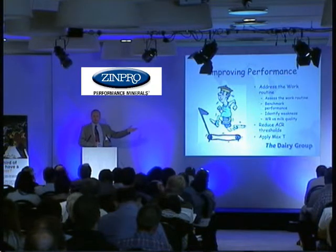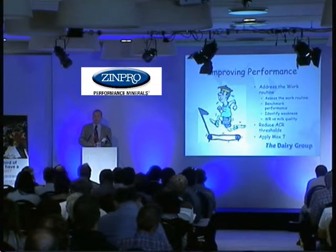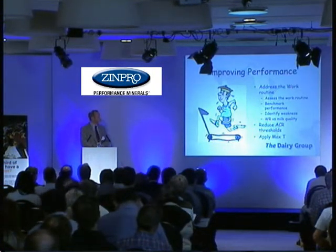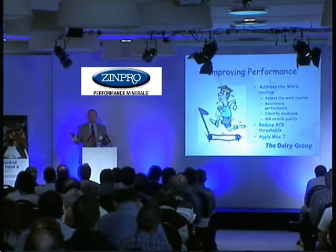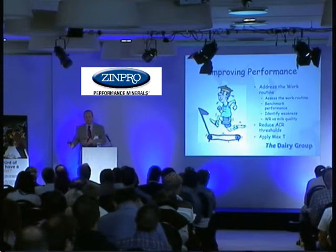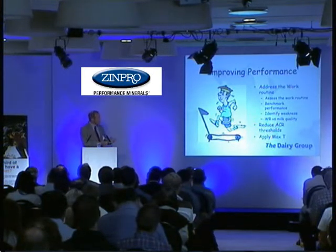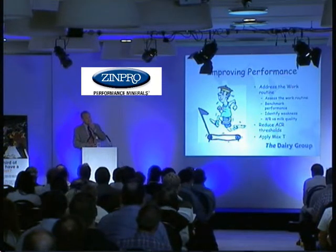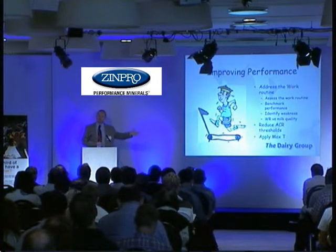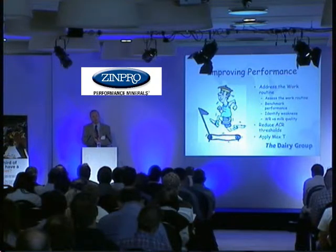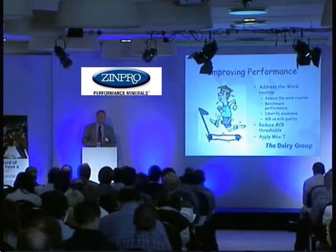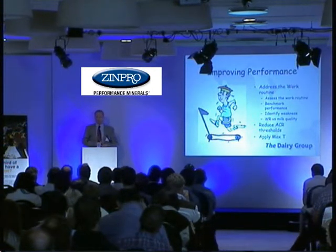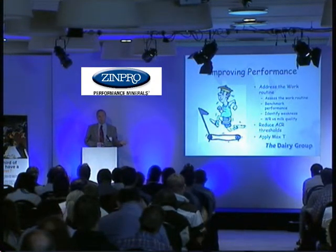Not many people actually spend time looking at their routine. The routine applied is the one that's evolved over time, rather than one critically examined. Once you've identified what you're doing, how do you benchmark it? Are you slow or quick in certain activities? Identify the work routine, identify the weaknesses within it. We could also start thinking about adjusting ACRs — reducing take-off times so 600-second cows become 400 or 500 seconds, bringing cups-on time down by looking at ACR thresholds. Or we could look at Max T — maximum unit on time.